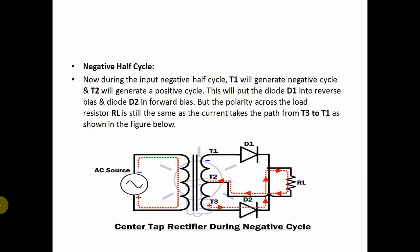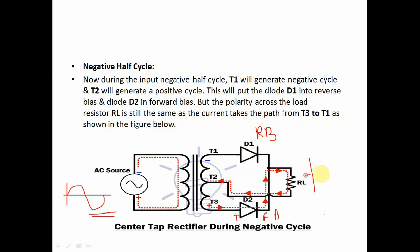During the negative half cycle, T1 is negative with respect to T2 and T3. So diode D1 acts as reverse biased and diode D2 acts as forward biased. D2 is forward biased because its anode has a positive charge connected to positive and cathode is connected to negative. Output is taken across load resistance RL.